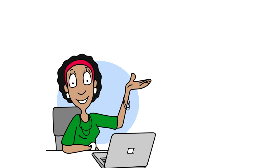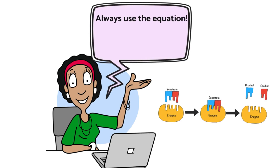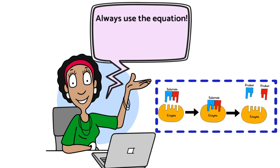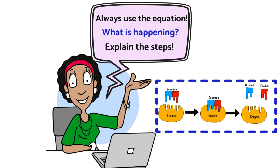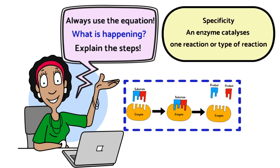When discussing how enzymes work, we use an equation derived by looking at a diagram and summarising what's happening in each step. So let's explain what is meant by enzyme specificity: an enzyme catalyzes one reaction or one type of reaction — it is very particular, very specific.